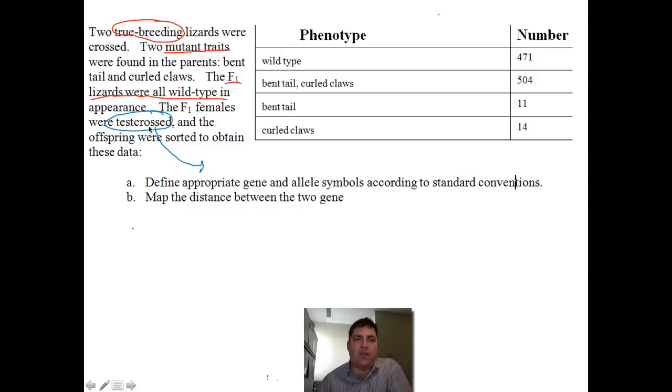If we're going to do a test cross, that means we're going to cross it with a lizard that is recessive, homozygous recessive, for both the traits we're looking at. One thing we would expect from a test cross is that if the genes are unlinked, there'd be a 1 to 1 to 1 to 1 ratio. That's basic Mendelian genetics.